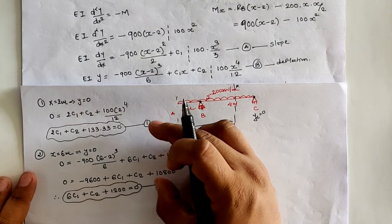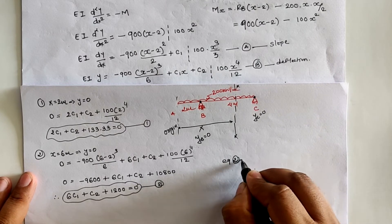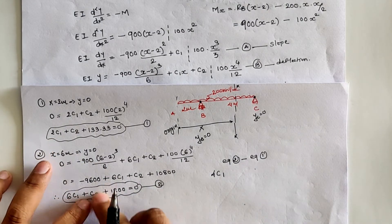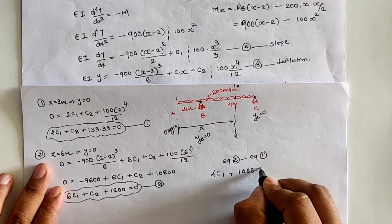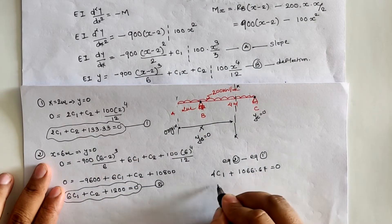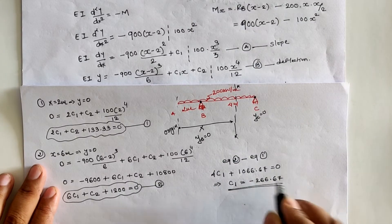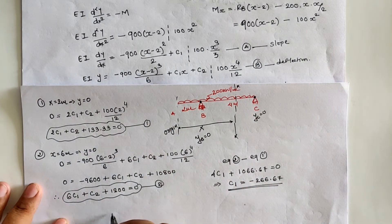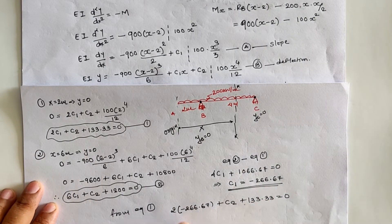Subtracting Equation 1 from Equation 2: 4C₁ = −1066.67, giving C₁ = −266.67. Substituting back into Equation 1 gives C₂ = 400.